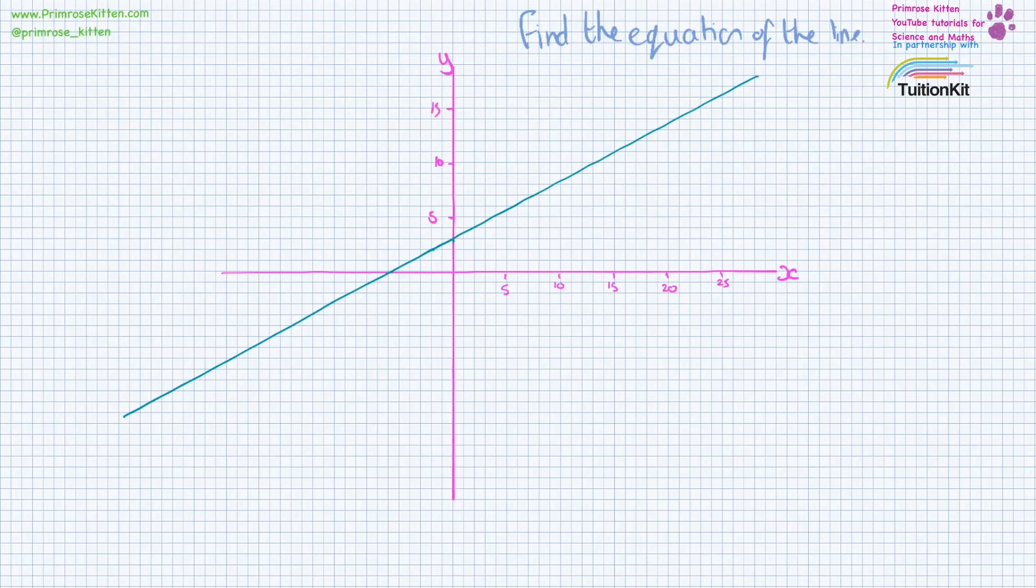We know that the equation of any straight line is going to be y equals mx plus c, with m being the gradient and c being the y-intercept.